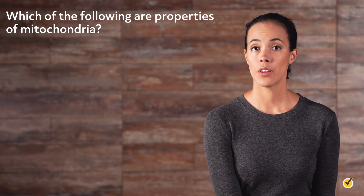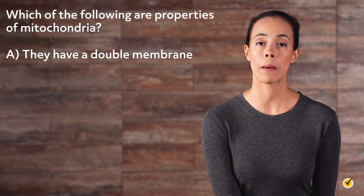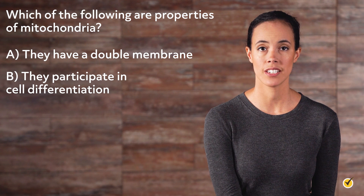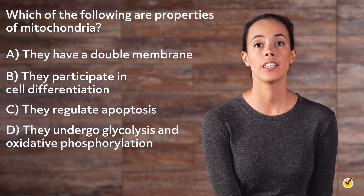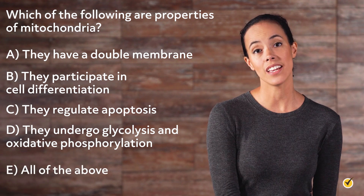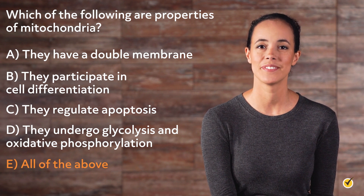Now that we've gone over what a mitochondrion is and what it does, let's look at a review question. Which of the following are properties of mitochondria? A: they have a double membrane. B: they participate in cell differentiation. C: they regulate apoptosis. D: they undergo glycolysis and oxidative phosphorylation. Or E: all of the above. The answer is E, all of the above. Thanks and happy studying!